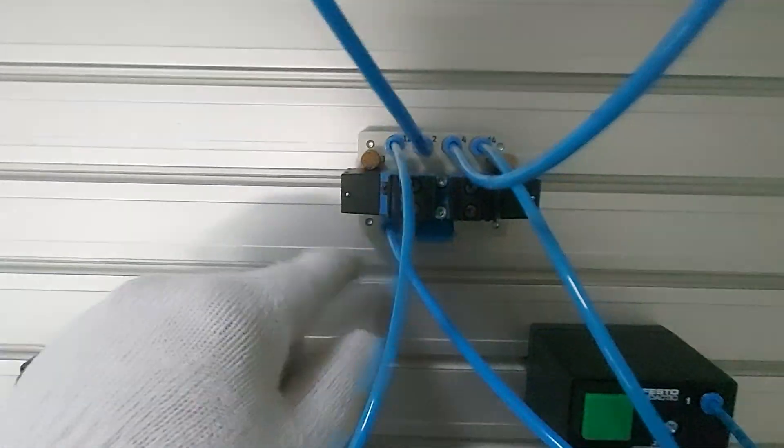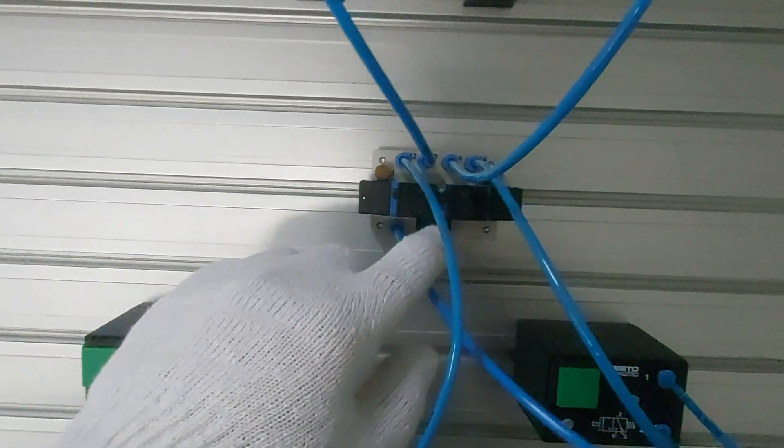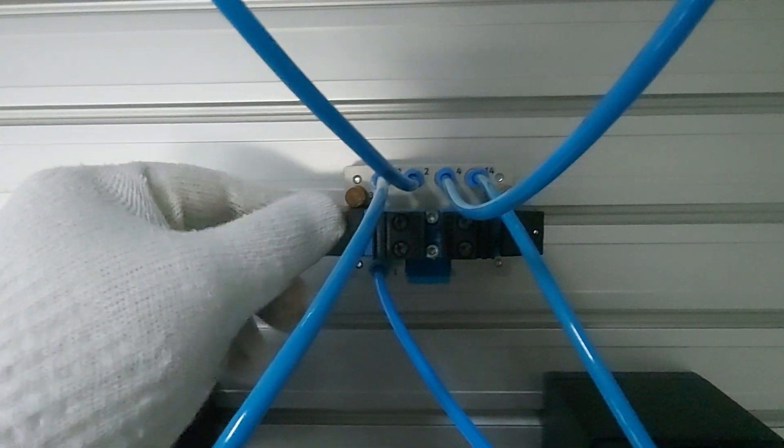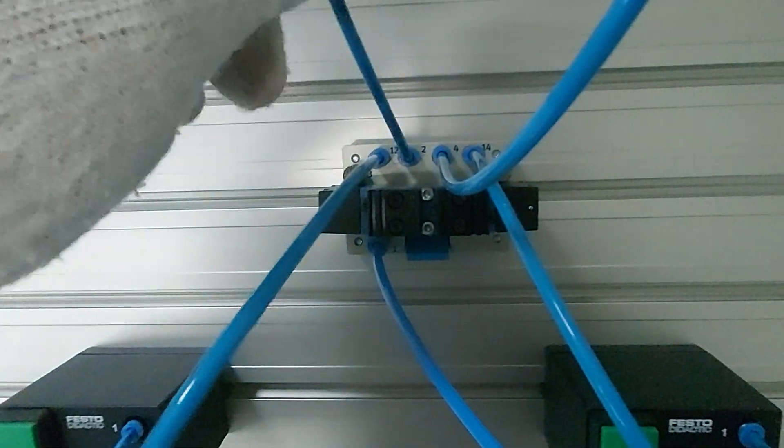As we discussed, even numbers are the output. And 1-2, this is the supply for 2. Because this valve doesn't operate by a button or a selector. It operates by compressed air. So you have to give it supply 1-2 to activate the 2.